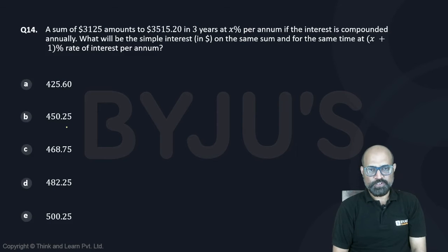A sum of 3125 amounts to 35152.20 in 3 years at x percent per annum if the interest is compounded annually. What will be the simple interest on the same sum and for the same time at x plus one percentage rate of interest per annum?